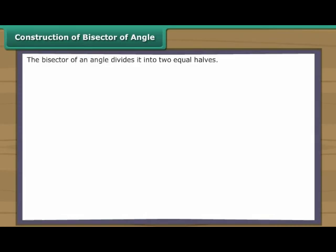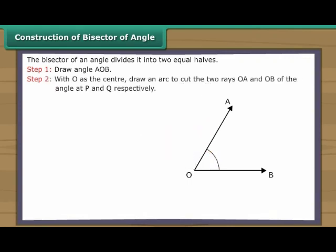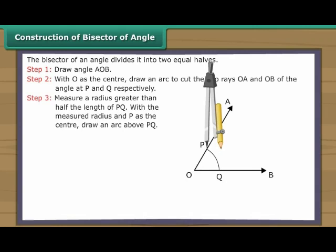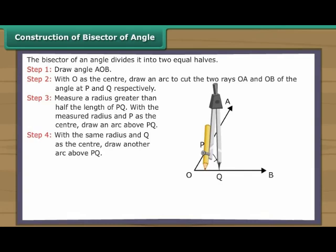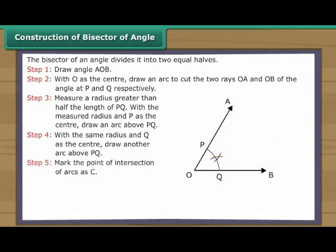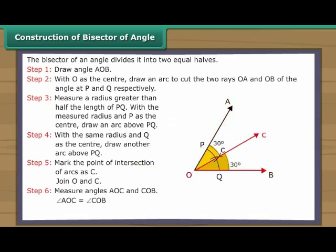Construction of Bisector of Angle. The bisector of an angle divides it into two equal halves. Let us learn to construct an angle bisector. Draw angle AOB. With O as the centre, draw an arc to cut the two rays OA and OB of the angle at P and Q respectively. Measure a radius greater than half the length of PQ. With the measured radius and P as the centre, draw an arc above PQ. Mark the point of intersection of arcs as C. Join O and C. Measure angles AOC and COB. Angle AOC is equal to angle COB. Therefore OC is the bisector of angle AOB.